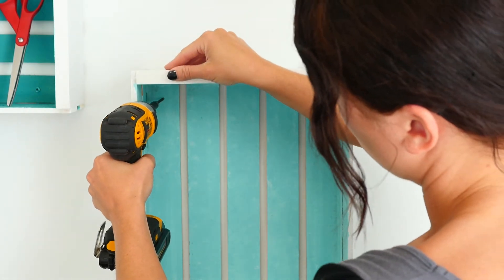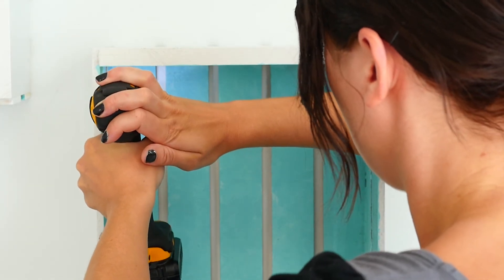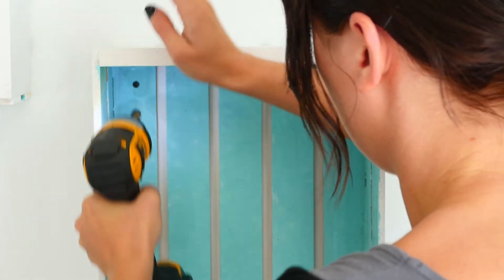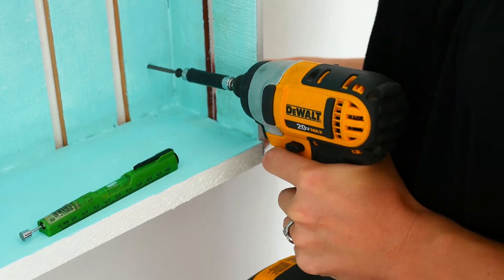For the boxes with slats on the back, simply secure one corner. Use a bubble level to ensure it is level and then screw in the opposite corner.